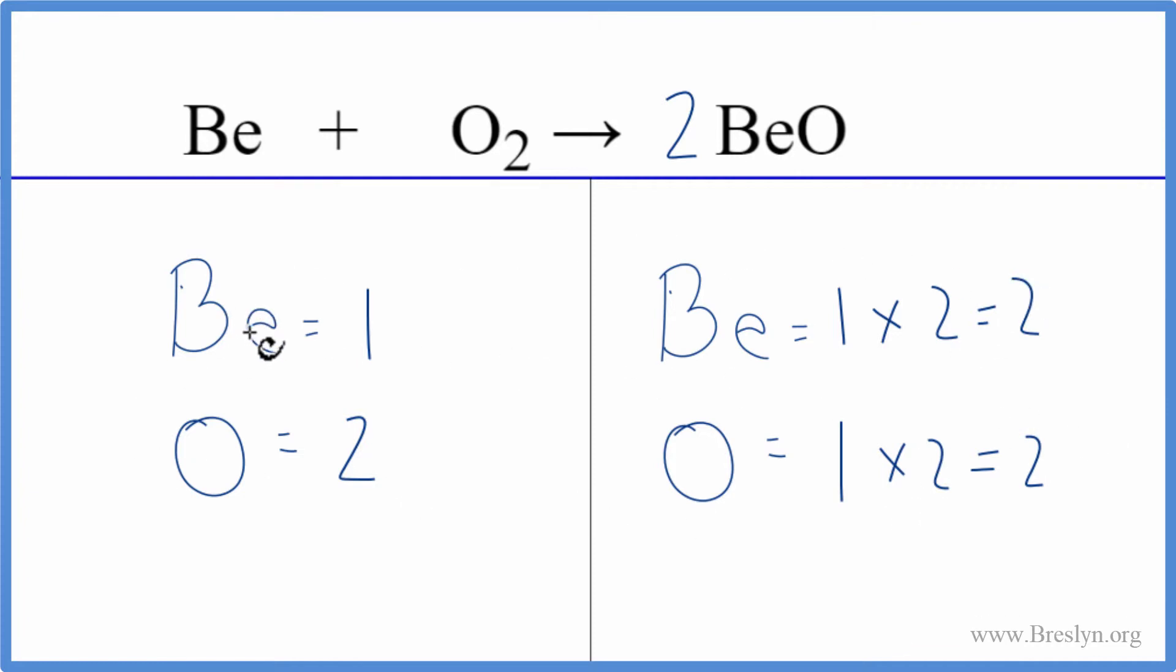But the berylliums aren't. That's pretty easy to fix because beryllium, it's by itself. When we change beryllium, it doesn't change anything except the beryllium atom. So we have a two here and a one here. We put a coefficient of two in front of the beryllium.